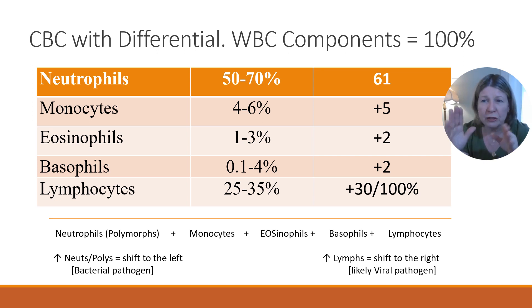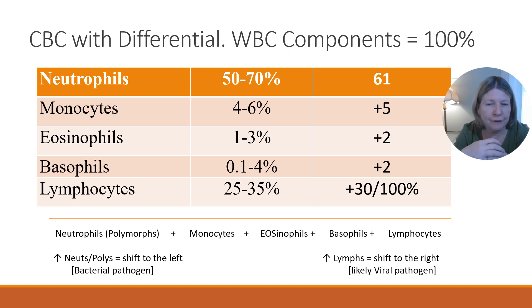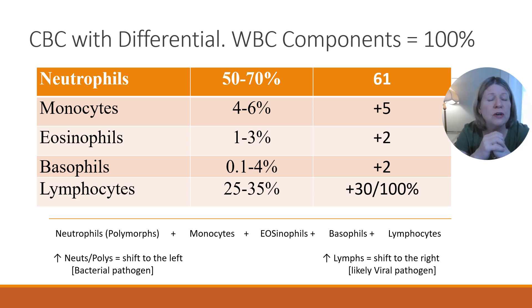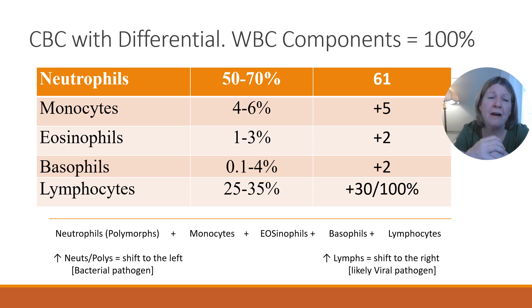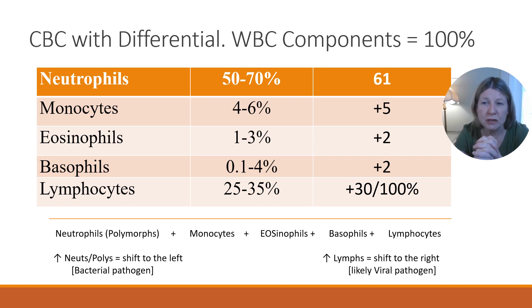There's a table with all of the differentials and what they could mean, but as a general rule: if you have an elevation of neutrophils — polymorphs, granulocytes, all the same thing — higher than 70%, we identify that as a shift to the left and it might be a bacterial pathogen. What about those who had coronavirus? If a lymphocyte count is elevated higher than 35%, that would be identified as a shift to the right, likely a viral pathogen, and we don't give antibiotics for a virus.